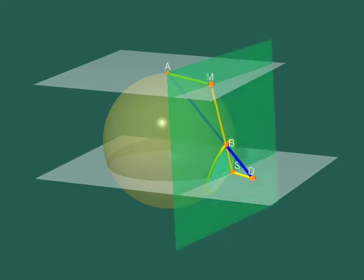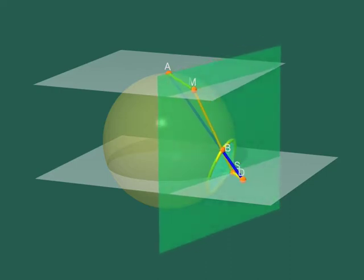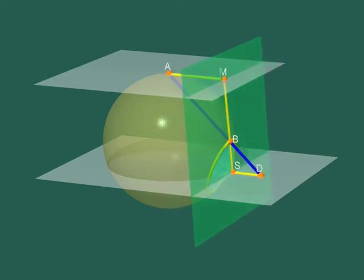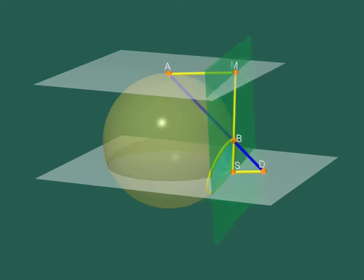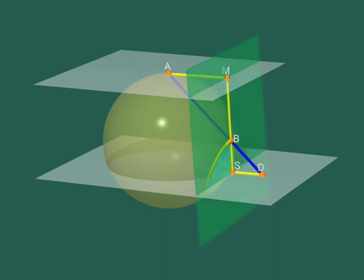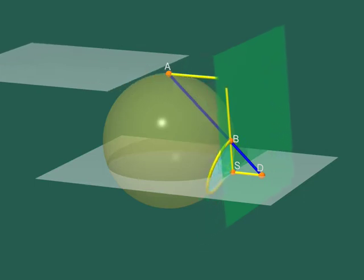When B moves along the yellow circle, the segment BS keeps tangent to the sphere. Its length is therefore constant. Since BS and DS have the same length, the moving segment DS also retains a constant length.